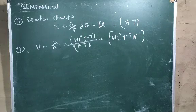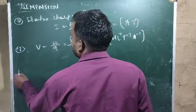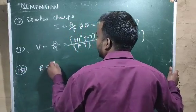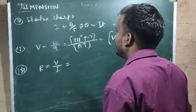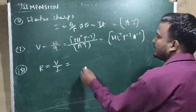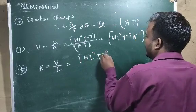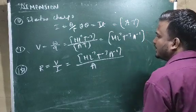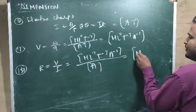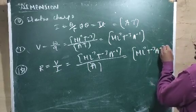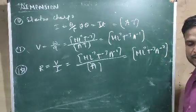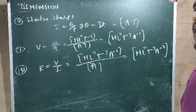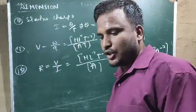Then dimensional formula for resistance. R = V / I. The dimensional formula for potential is M L² T⁻³ A⁻¹ and for current is A. Solving this, the result will be M L² T⁻³ A⁻². That covers this video. The remaining applications of dimensional formula will be seen in the next video. Thank you very much.